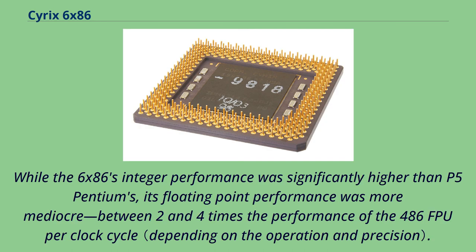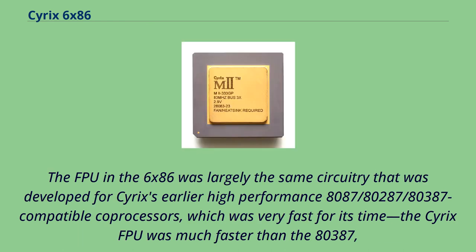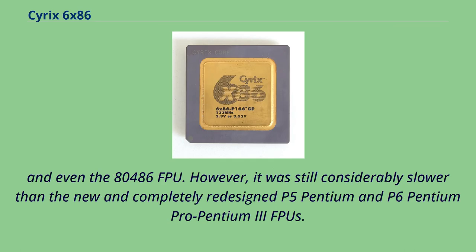While the 6x86's integer performance was significantly higher than the P5 Pentium's, its floating-point performance was more mediocre — between 2 and 4 times the performance of the 486 FPU per clock cycle. The FPU in the 6x86 was largely the same circuitry developed for Cyrix's earlier high-performance 8087/80287/80387-compatible coprocessors, which was very fast for its time and much faster than the 80387 and even the 80486 FPU. However, it was still considerably slower than the newly redesigned P5 Pentium and P6 Pentium Pro FPUs.